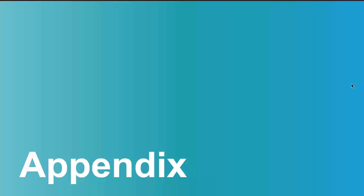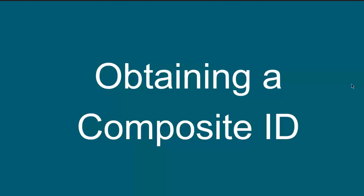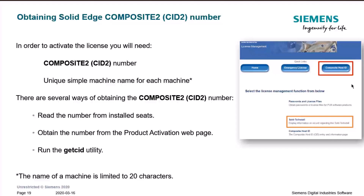Let's cover how you obtain the Composite ID number — important because in addition to your WebKey account, you need this to successfully log in to the licensing website. There are three ways: you can read the number from installed seats, obtain it from the product activation web page, or run the getcid.exe utility located in the program directory under your Solid Edge installation.